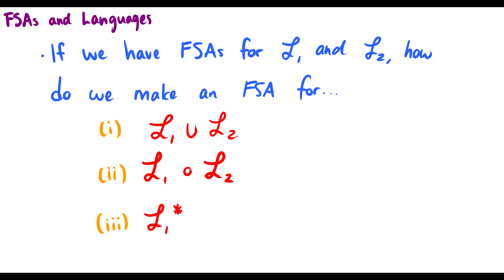So, if we have finite state machines for L1 and L2, how do we make a finite state machine for the union, concatenation, and star? Today I'll show you. The intersection is straightforward because you're just taking the components that are the same and you're left with the finite state machine — you're not really adding anything. So I won't cover that, but the union, concatenation, and star, I will.